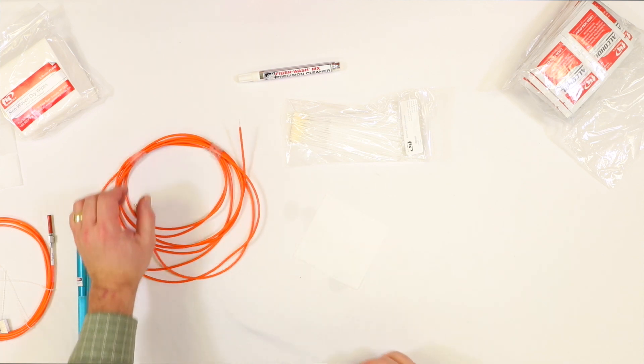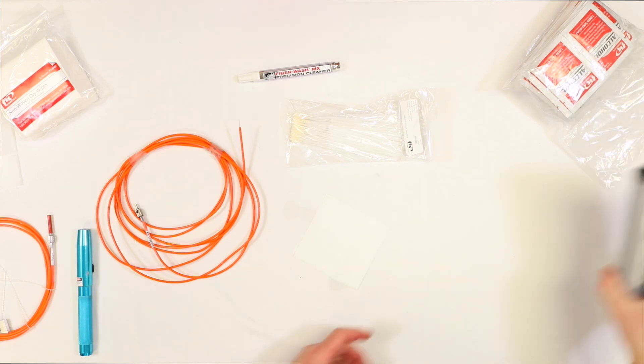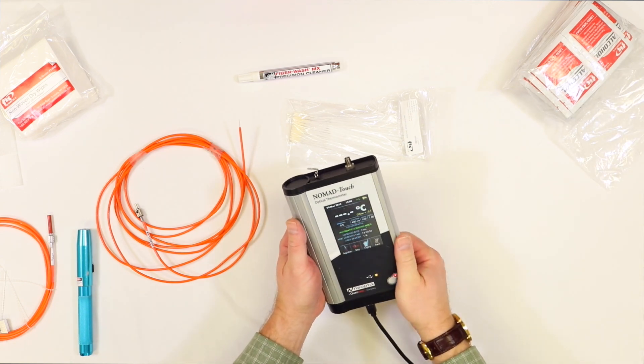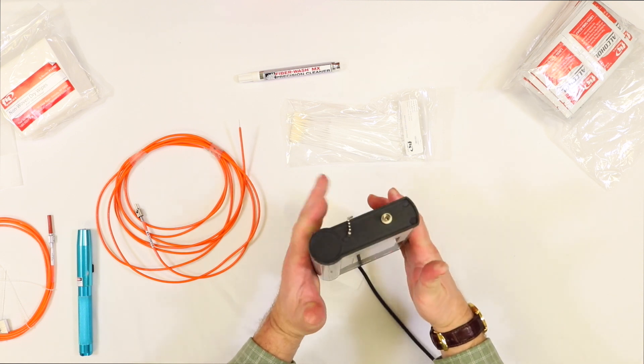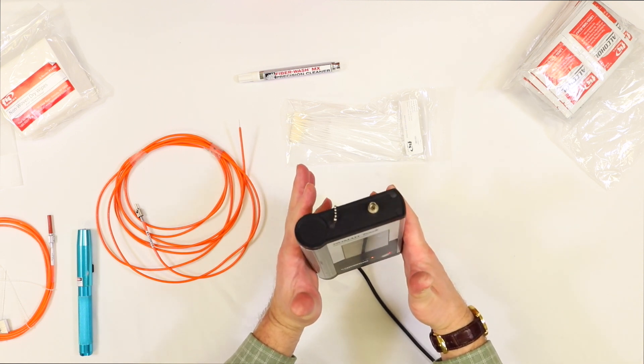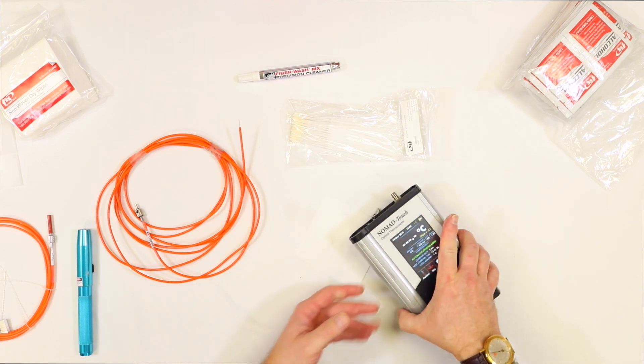We've got a Nomad Touch portable thermometer. You can see this is the mating end of the ST connector, and this is where we're going to need our Q-tips.